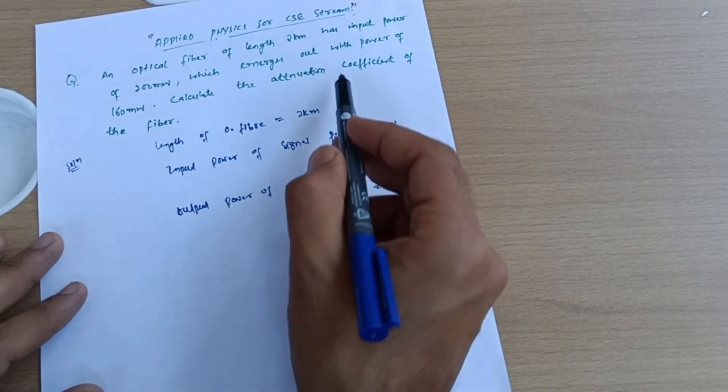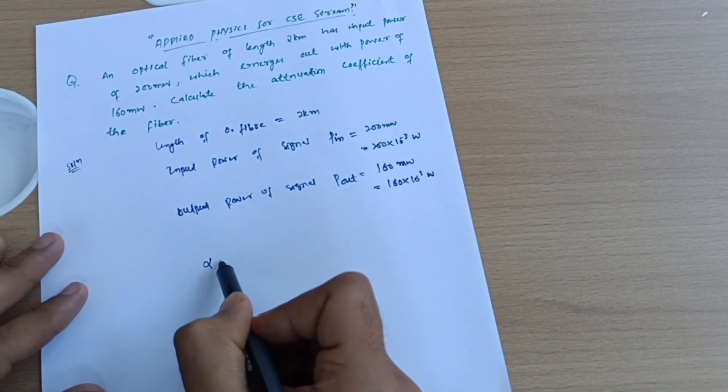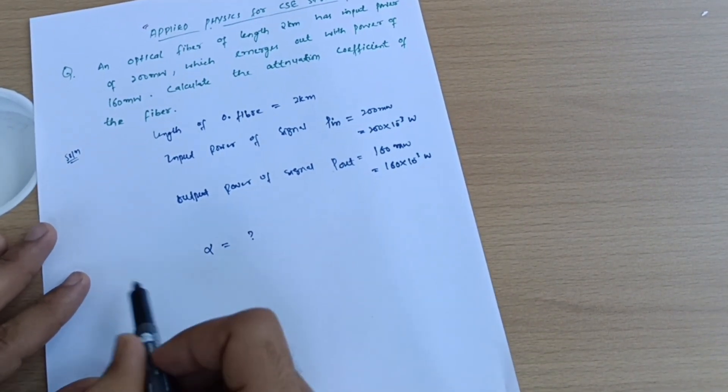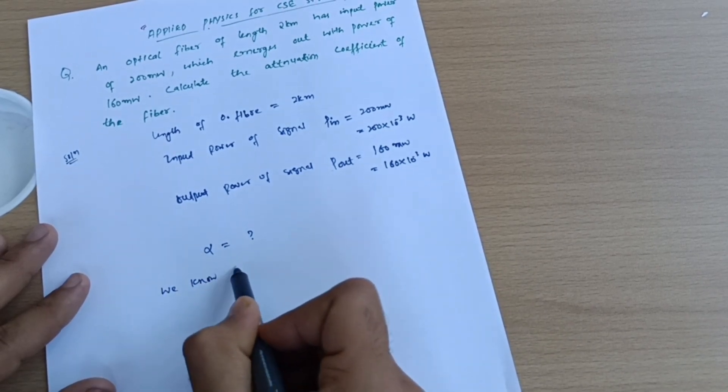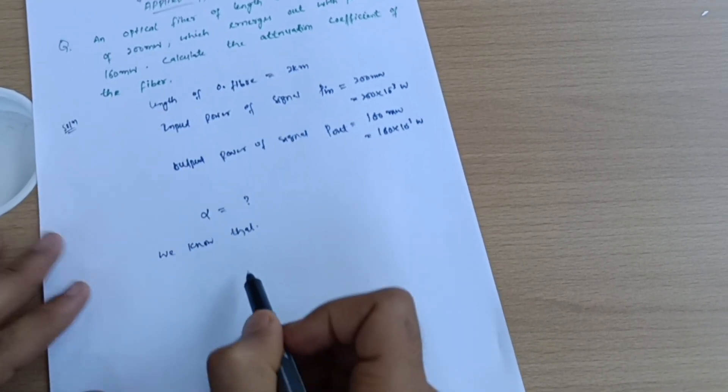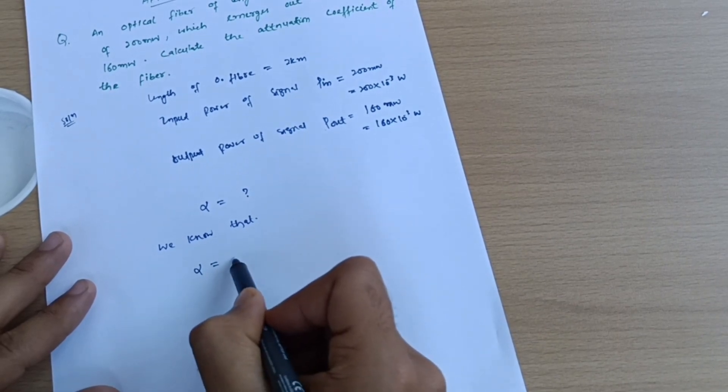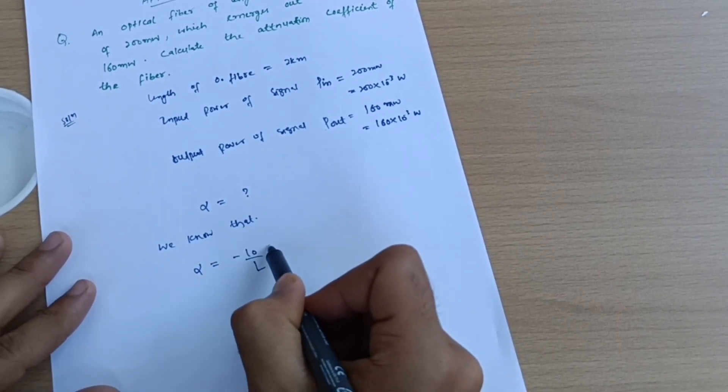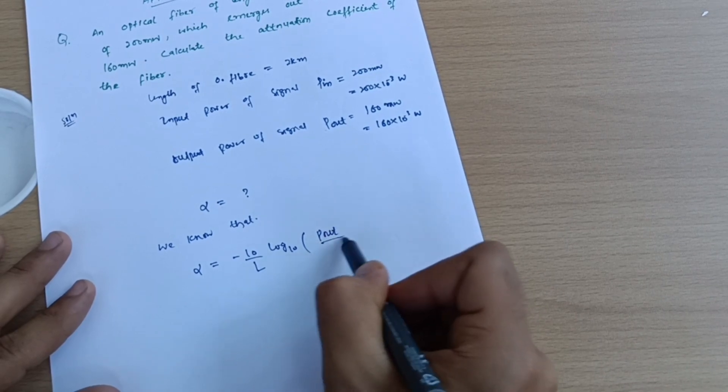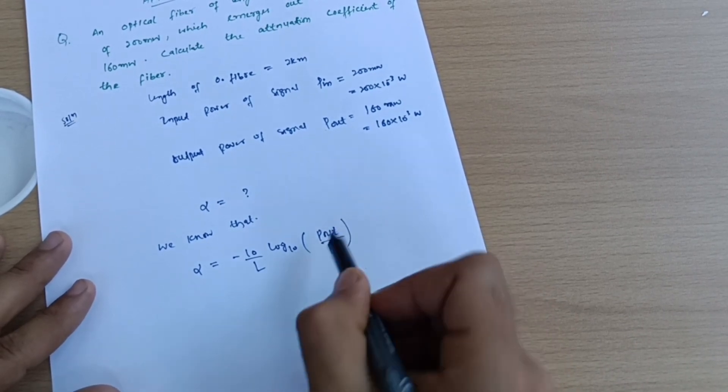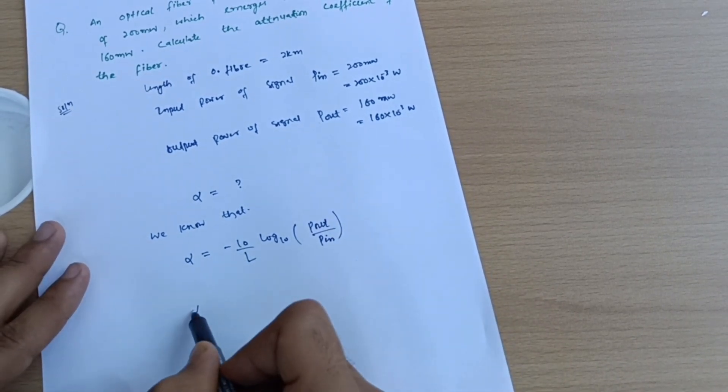Calculate the attenuation coefficient. So attenuation coefficient is denoted by alpha, which we have to calculate, and already we have the formula for it. We know that alpha is equal to minus 10 upon L, log to the base 10, P_out divided by P_in. This is the formula for attenuation coefficient.